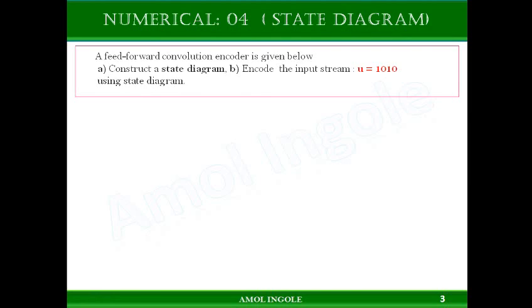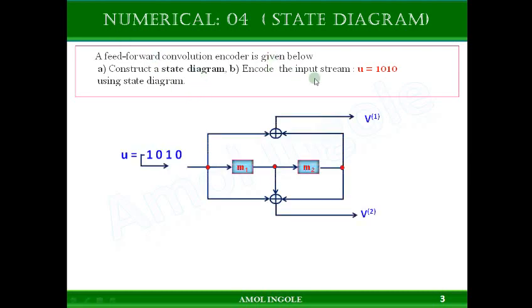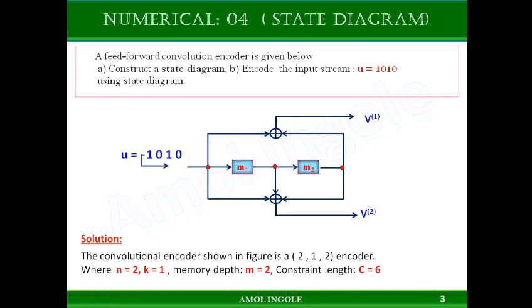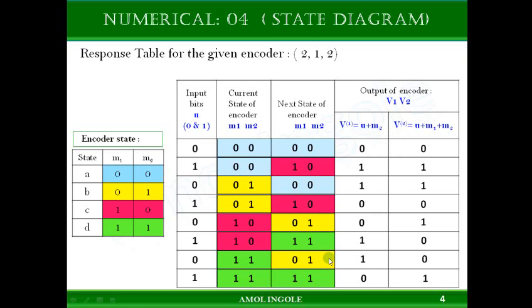Let us discuss this numerical. A feed-forward convolutional encoder is given and we need to construct a state diagram. We are considering the same numerical we discussed in the tree diagram video. From the statement of the numerical you can identify that n equals 2, k equals 1, and the number of memory stages m equals 2. I am assuming you already know how to prepare the response table from the earlier video.